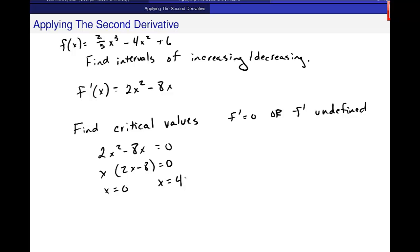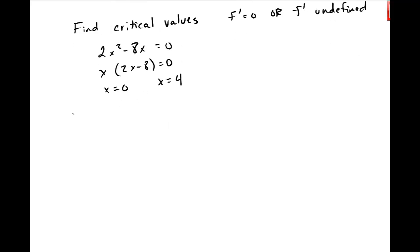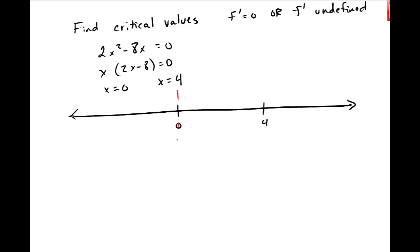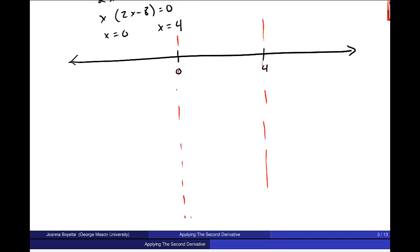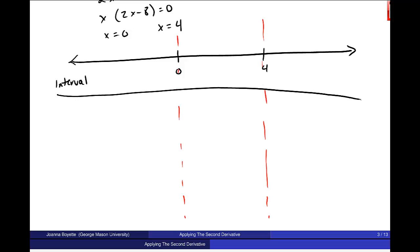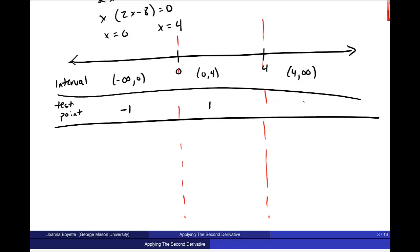When we do the first derivative test, I get a number line with 0 and 4 splitting the real number line. I'll do the first derivative test on the intervals: minus infinity to 0, 0 to 4, and 4 to infinity. With intervals of increasing or decreasing or concavity, we always use open parentheses. I need a test point in each interval and I want to find f prime at each test point.